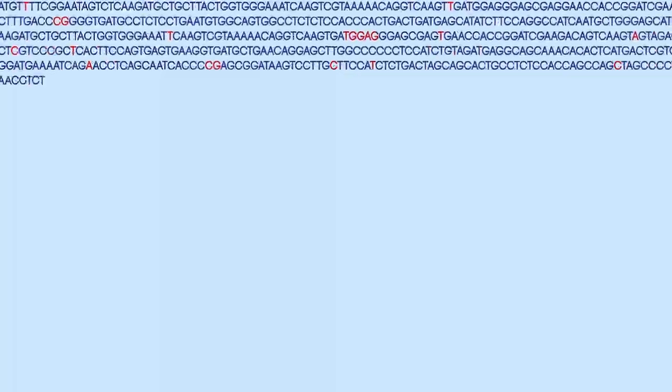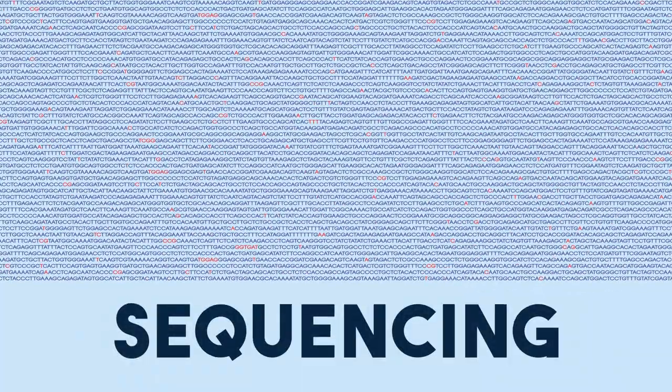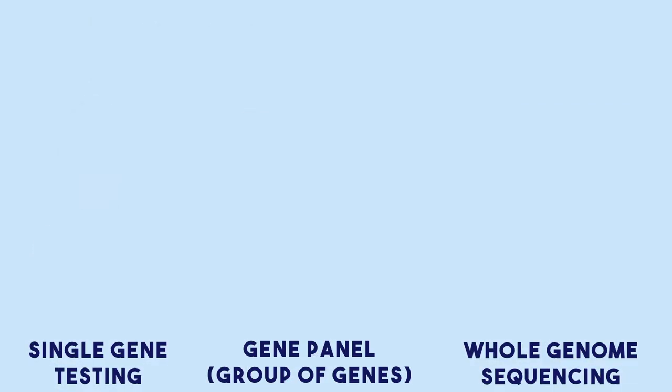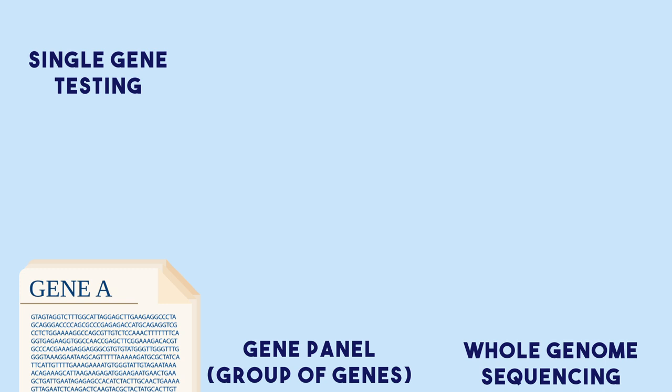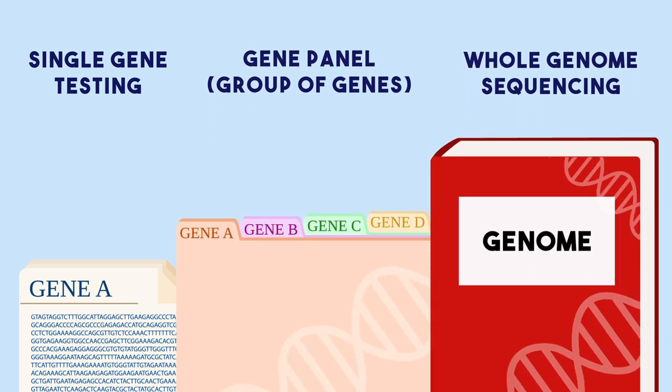One way scientists can detect these differences in our DNA is through the use of a genetic test called sequencing. As the name suggests, sequencing allows scientists to read every single letter that makes up the genome sequence. Based on the reason for testing, scientists can choose how much of the genome they are interested in looking at. They can choose to read a specific gene, groups of genes, or even the entire genome, which is what is referred to as whole genome sequencing.